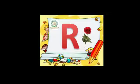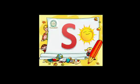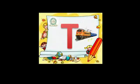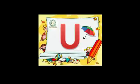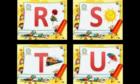R for rose. S for sun. T for train. U for umbrella. R, S, T, U. You love me and I love you.